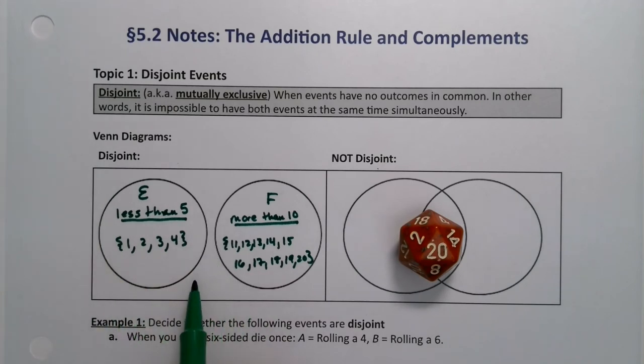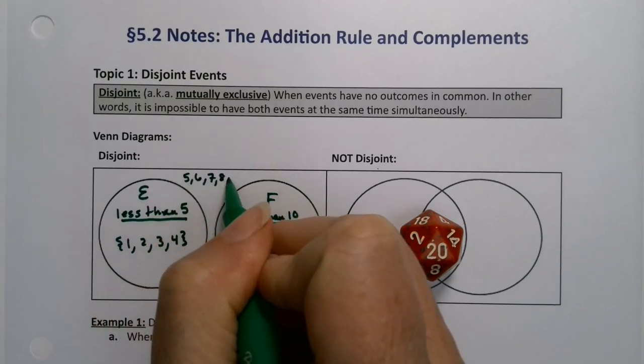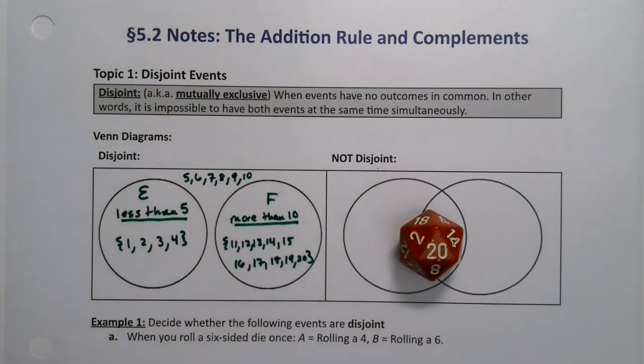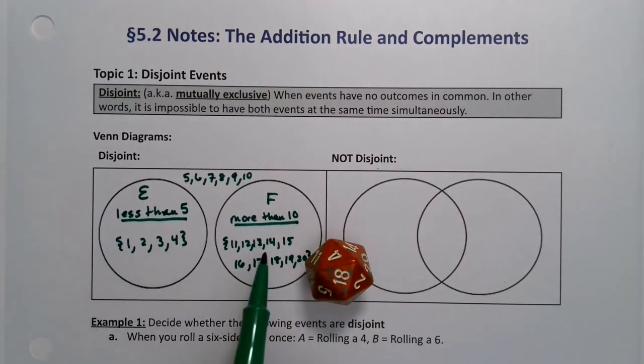I cannot toss this die once and have it land in both this space less than 5 and this space more than 10 simultaneously. It's either in one or the other, or it could technically be in none, which is the box. The box represents the remaining pieces of the sample space that are not in either one of these events, which would be 5, 6, 7, 8, 9, and 10.